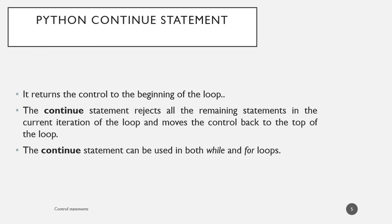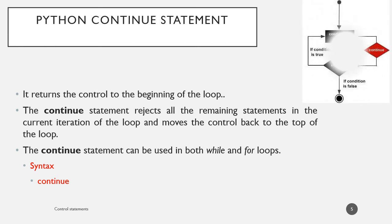Next is the Python continue statement. It returns control to the beginning of the while loop. The continue statement rejects all the remaining statements in the current iteration of the loop and moves the control back to the top of the loop. It does not exit from the loop — it just skips a few statements of the current iteration. This continue statement can be used in both while and for loops. The syntax is just the keyword continue. In the flowchart, wherever continue is encountered, the current sequence block is skipped and it checks for the next condition or goes to the next iteration.